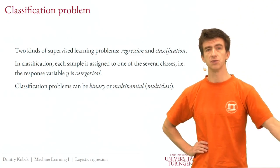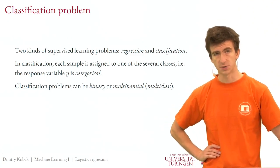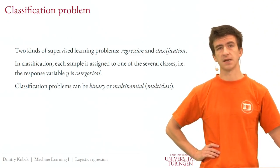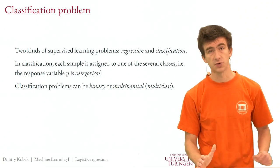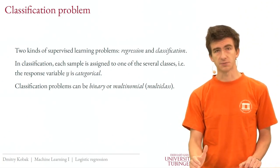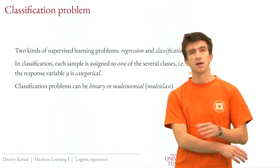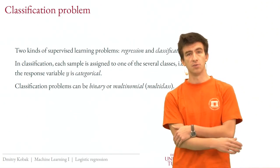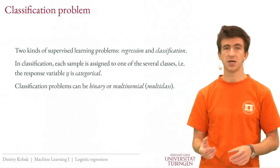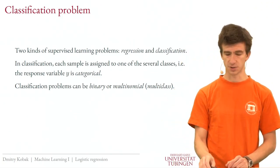If there are only two classes, which is by far the most common situation at least in textbooks, this is called a binary classification problem — for example, cat versus dog. If there are more than two classes, this is called a multi-class or multinomial classification problem.